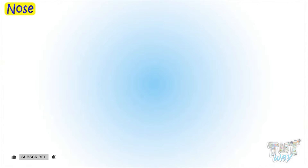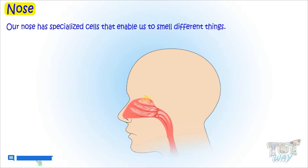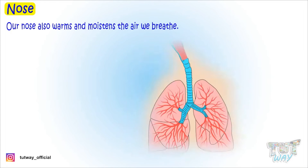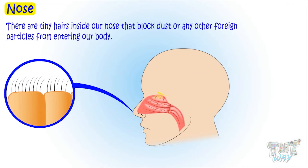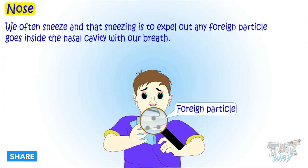Let's start with our nose. Our nose has specialized cells that enable us to smell different things. Our nose also warms and moistens the air we breathe, so that dry and cool air does not harm our internal organs. There are tiny hairs inside our nose that block any dust particles or foreign particles from entering our body. Often we sneeze, and that sneezing is to expel out any foreign matter that goes inside our nasal cavity with our breath.